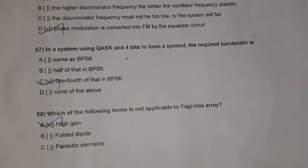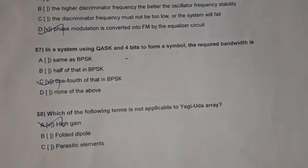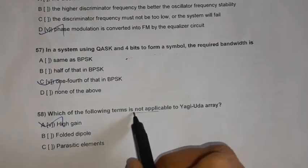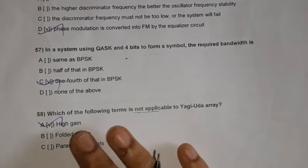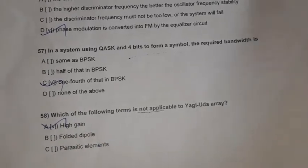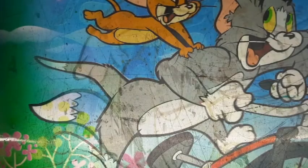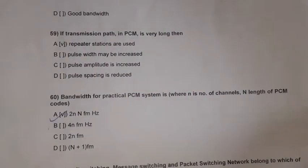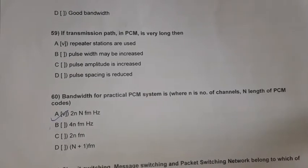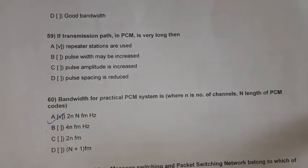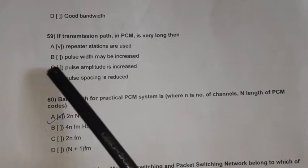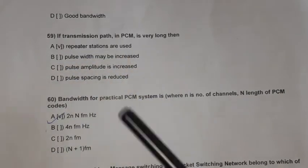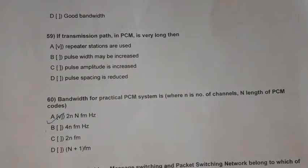Question 58: Which of the following terms is not applicable to Yagi-Uda? The answer is high gain — Yagi-Uda has lower gain and wide bandwidth. Question 59: If the transmission path in PCM is very long, then repeater stations are used.